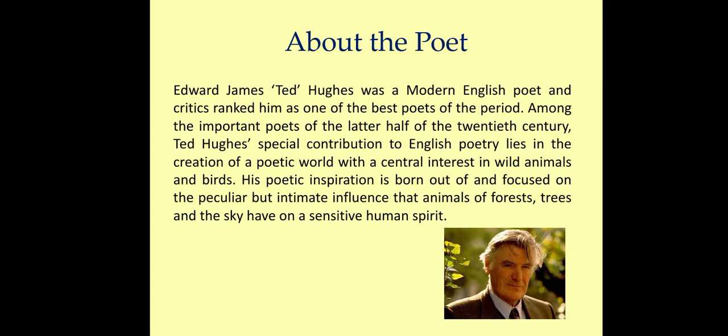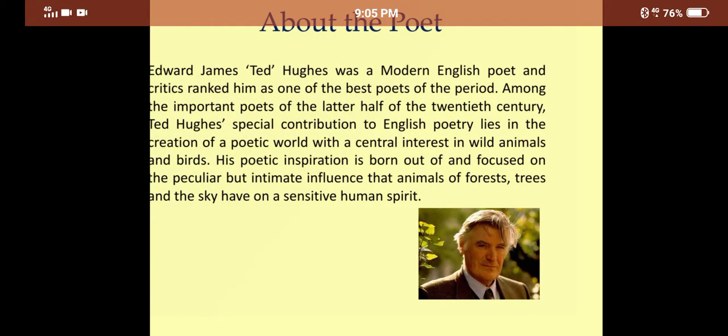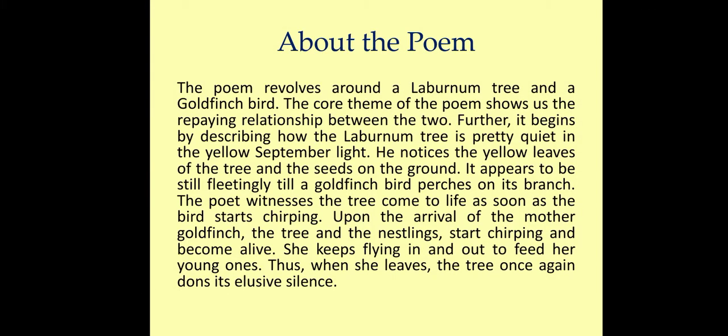I have just briefed you about the poet. Now let's know about the poem. The poem revolves around a laburnum tree and a goldfinch bird. The core theme of the poem shows us the repaying relationship between the two. It begins by describing how the laburnum tree is pretty quiet in the yellow September light. The poet notices the yellow leaves of the tree and the seeds on the ground. It appears to be still until a goldfinch bird perches on its branch.